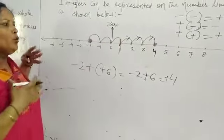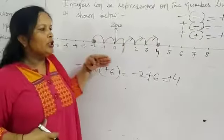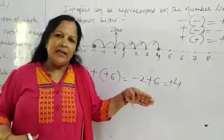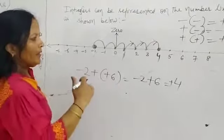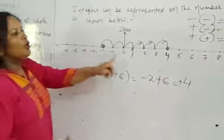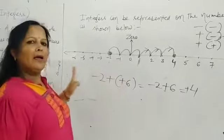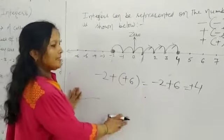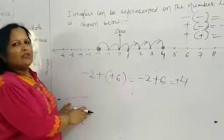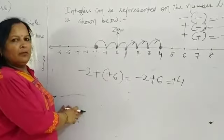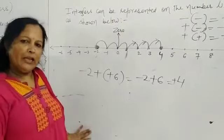When I am going to add, I will proceed to the right side. When I am going to subtract, I will proceed to the left side. This is the concept of how to add or subtract an integer on the number line. Thank you.